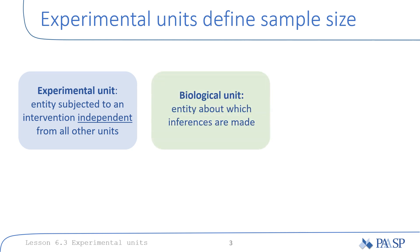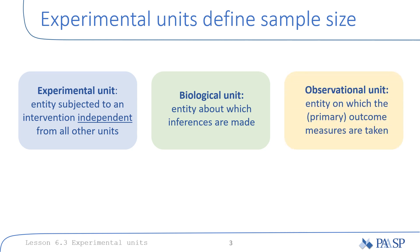The biological unit can be defined as the entity about which inferences are made. In our case study, the biological units are the different independent male and female mice used, and so the biological unit is identical to the experimental unit in this case. The observational units are the entities on which the outcome measures are taken — in our example, the different samples obtained from each mouse.